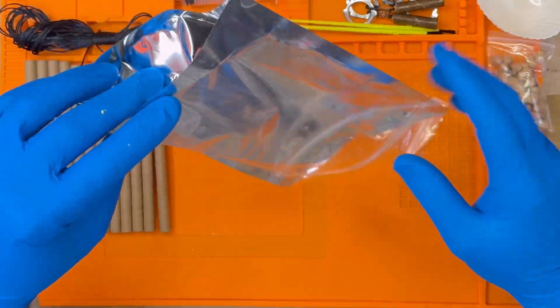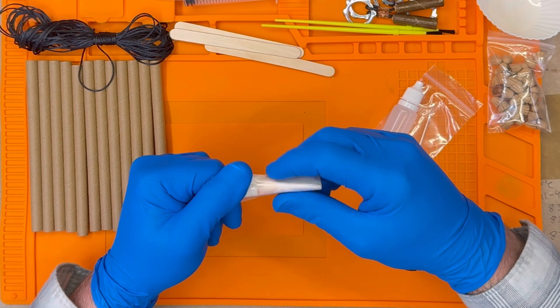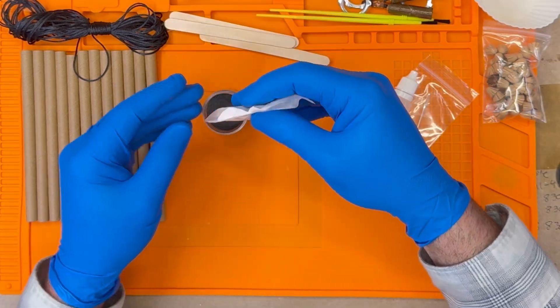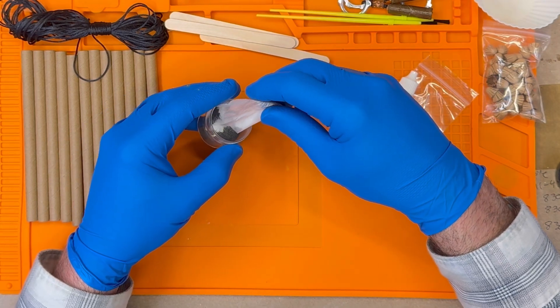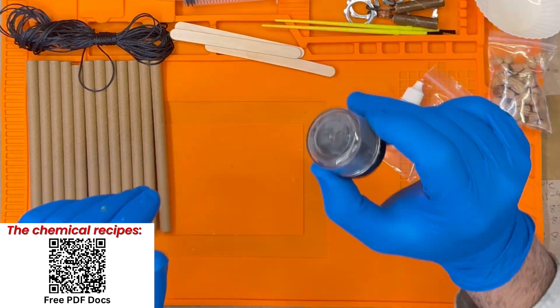We start by squishing the suspicious-looking potassium chlorate in the white bag to break up any clumps. Then we dump the bag into the ignition mix container and gently shake the crap out of it. Be careful because now this mix is live, and although it won't explode, if we are stupid, it could ignite.